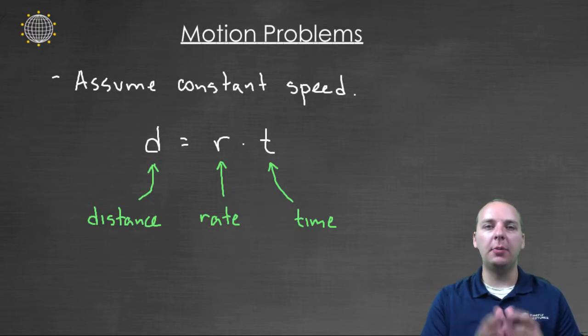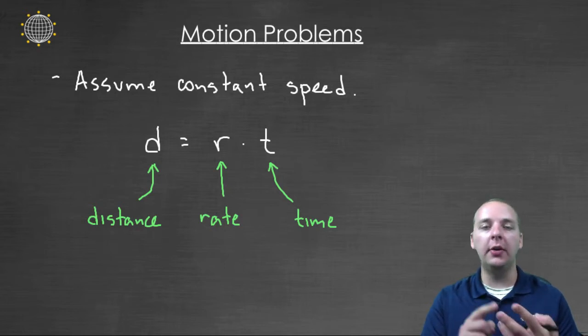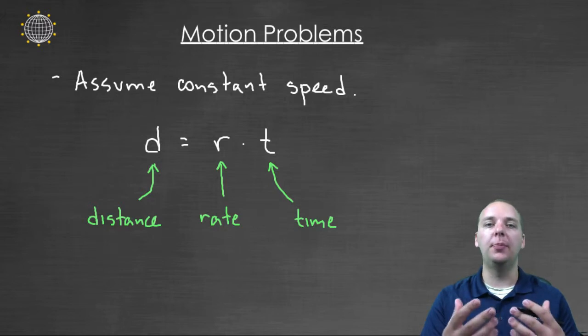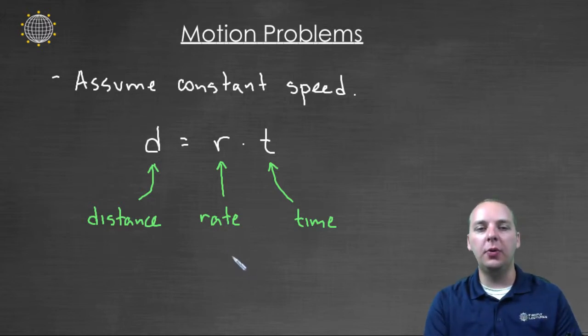In these motion problems what happens is you have an object that's moving. It might be a car, or a plane, or a boat, or it could be anything. But something's moving at a particular speed, at a particular rate, this rate will be constant. That's a good thing. That makes the math a little easier.